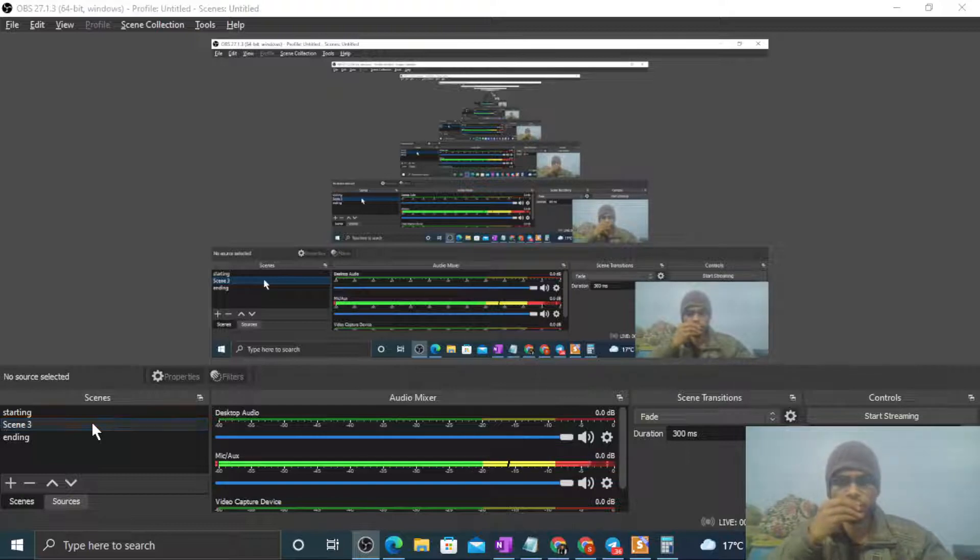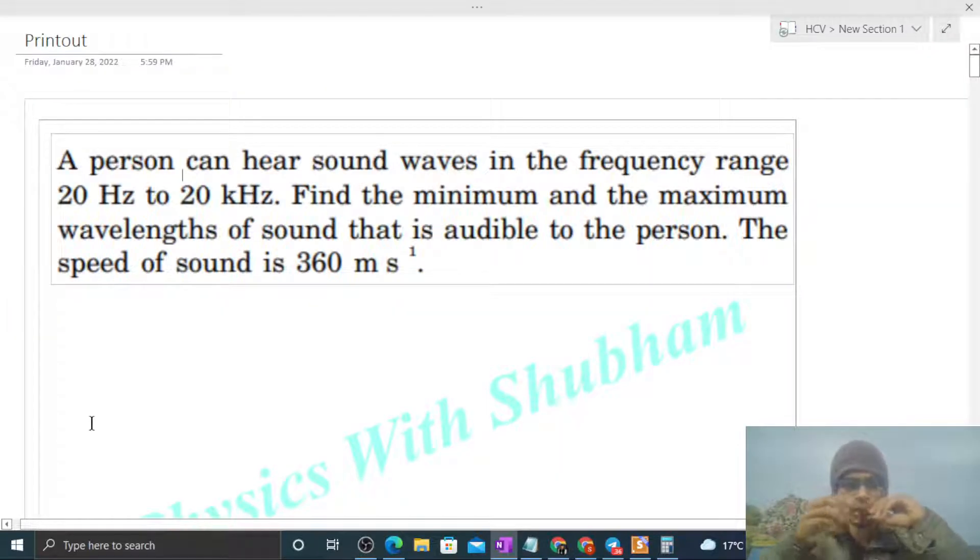Okay, hi everyone. So today let's discuss one interesting problem. It says a person can hear sound waves in the frequency range 20 Hertz to 20 kilohertz. Find the minimum and the maximum wavelengths of sound that is audible to the person. The speed of sound is 360 meter per second.